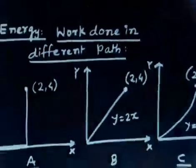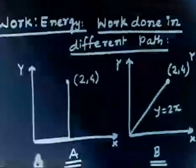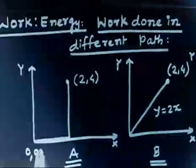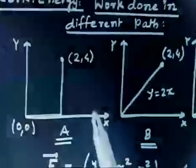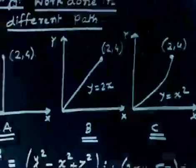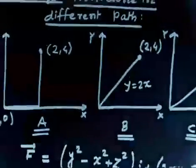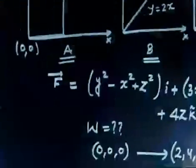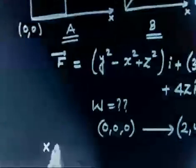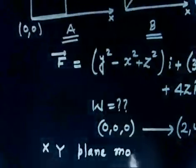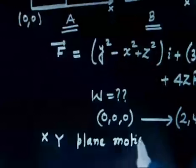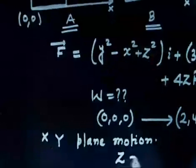The particle is going from (0,0,0), and this motion is only in one plane — the x-y plane. This is also moving in the x-y plane. So z coordinate is always 0 in this case. This is a planar motion; the movement is only in the x-y plane. So if this motion is in the x-y plane, I can say z coordinate is always 0.